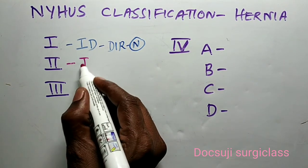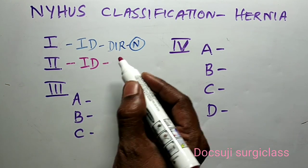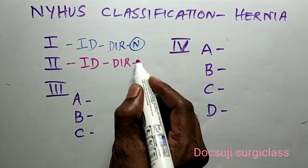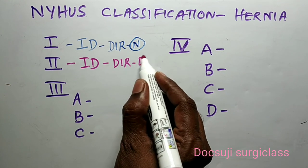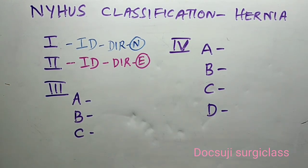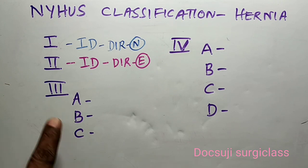Type 2 is also an indirect inguinal hernia, but here the internal ring — that is, the deep inguinal ring — is enlarged. However, the hernia does not extend down into the scrotum.